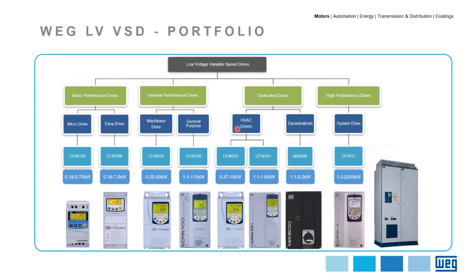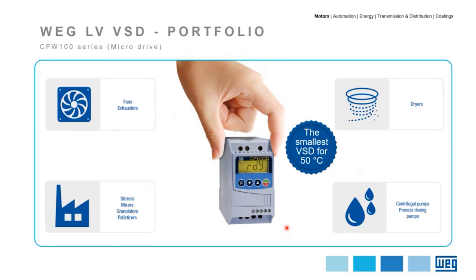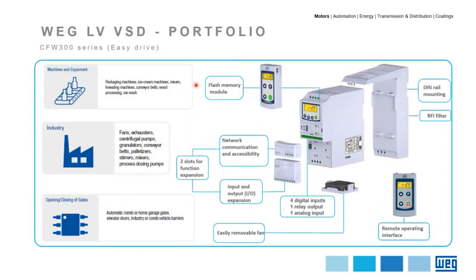VAG also produces some dedicated VFDs for HVAC segments and decentralized solutions to be assembled directly to motor terminals. The CFW 100 series is a VFD suitable for single-phase entry to run three-phase motors up to 0.5 kilowatt — an ideal solution for small machine manufacturers. The CFW 300 series is a VSD available up to 7.5 kilowatt at 400 volts, with options for single-phase or three-phase entry and a wide range of accessories such as communication protocols, IO expansion, remote HMI operator, RFI filters, and so on. This inverter can be applied to many applications requiring easy operation.